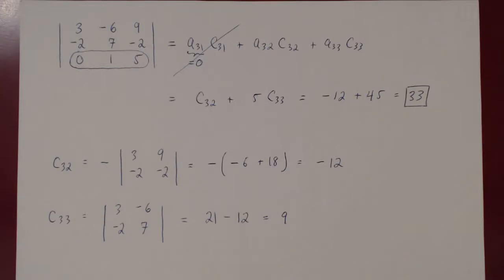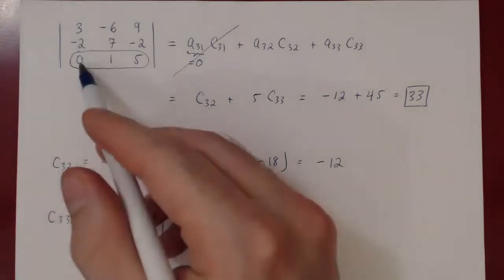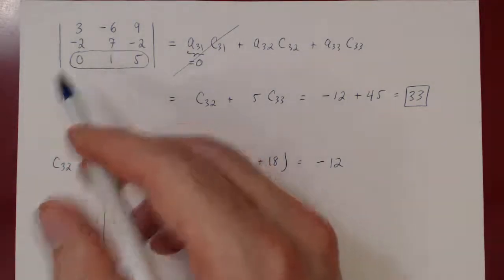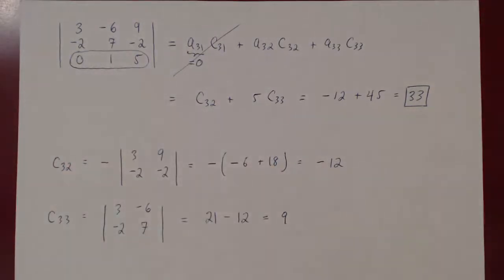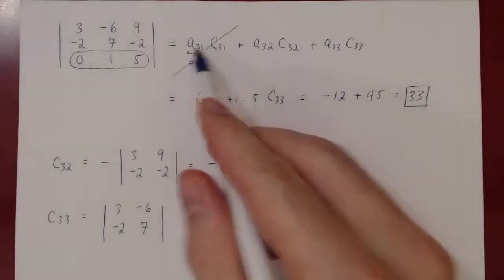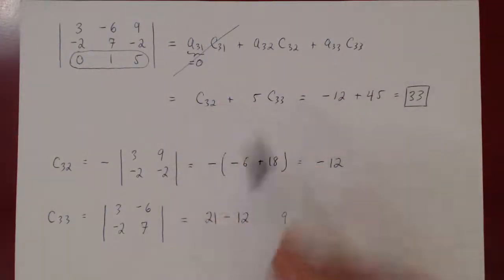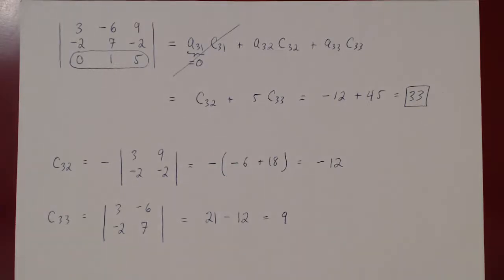Now the question is: what if we have a matrix that doesn't have a single zero entry? Since we've figured out that zeros are good, could we perhaps find a way to introduce zeros into the matrix so we have to compute fewer cofactors, making our computation of the determinant much easier? The answer is yes — using our row operations.